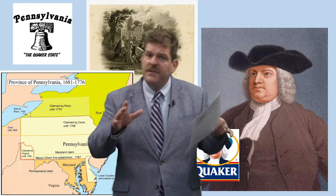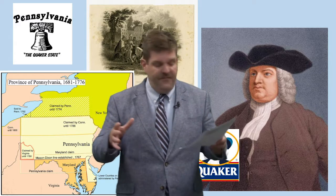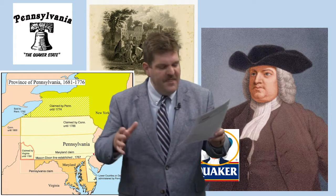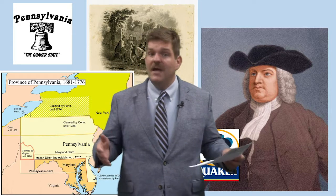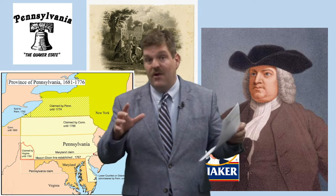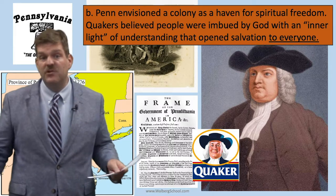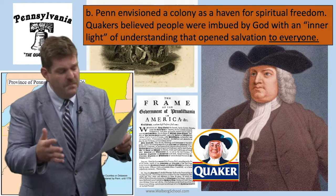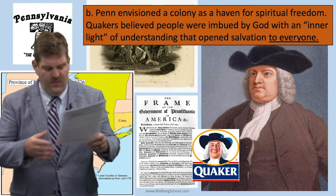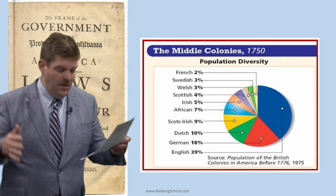Penn was a Quaker, and Quakers were a particular sect of Christianity that upheld a very strict moral code. Pennsylvania became a colony of Quakers. It was designed as a Quaker refuge for people persecuted in England, and there they developed a pacifistic policy towards Native Americans and became prosperous. The Quakers are dedicated to radical pacifism, and that's really the character of the Pennsylvania colony. Penn envisioned this colony as a haven for spiritual freedom. Quakers believed that all people were imbued by God with an inner light of understanding, and that inner light opened salvation to everyone. Quakers believed that liberty was a universal entitlement — extended to women, to Black people, and to Indians.